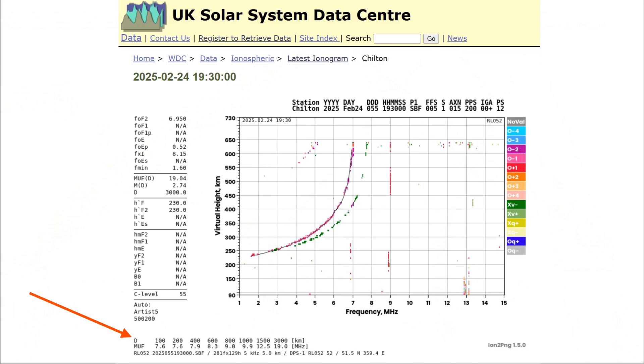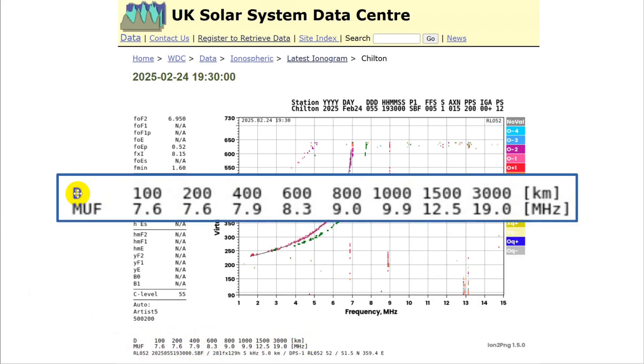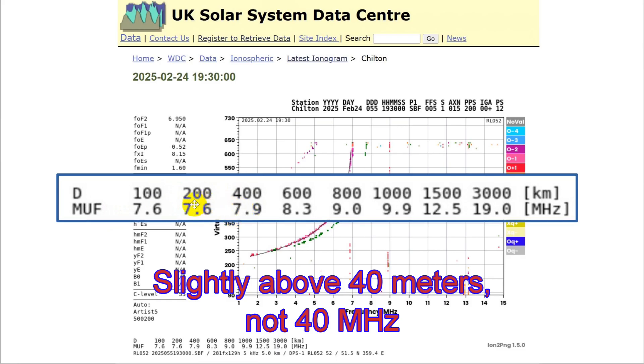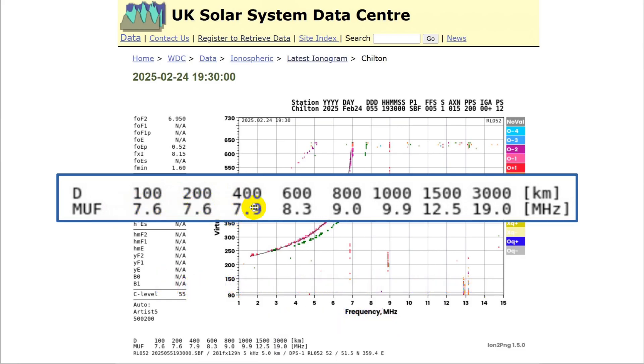This is an ionogram. It's from the UK Solar System Data Center, and it's the latest ionogram for a station at Chilton in the UK. I picked this one because it's current for today. The 1930 is UTC, so it's already just about dark over there. Now, there's some stuff right down here I want to pay particular attention to. This is the distance from the transmitting station in kilometers. At 100, 200, 400, you note that the maximum usable frequency is slightly above 40 megahertz. So you may very well be able to use 40 megahertz. If you want to go longer distances, you'll have to go way out to much higher frequencies. So this is where we're talking about for near vertical incidence sky wave propagation.